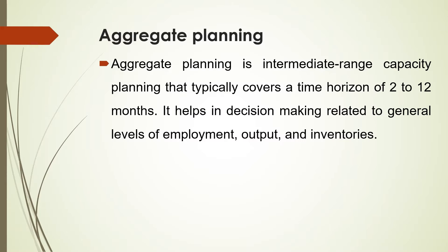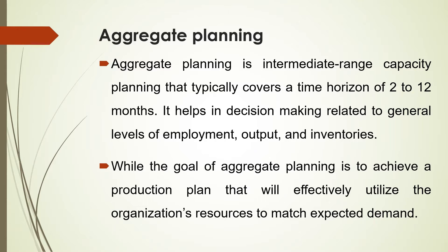Let us quickly review the definition and the goal of aggregate planning. Aggregate planning is intermediate-range capacity planning that typically covers a time horizon of 2 to 12 months. It helps in decision-making related to general levels of employment, output, and inventories. The goal of aggregate planning is to achieve a production plan that will effectively utilize the organization's resources to match expected demand.